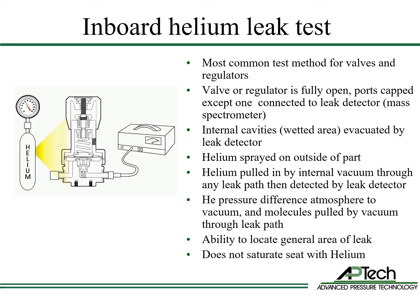Now let's review the specific leak testing methods and their relative merits. The inboard helium leak test is the most common test method. The valve or regulator is fully open and all ports are capped except one, which is attached to the mass spectrometer. The leak detector's vacuum pump evacuates the internal cavities to vacuum. Helium gas is sprayed around the part and into leak test ports. The differential pressure from atmosphere to vacuum pulls the helium molecules through the leak path. This method allows the test person to locate the general area of a leak, which is very useful for troubleshooting, and does not saturate the seat with helium.